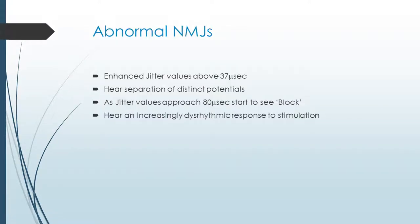Let's move on to abnormal neuromuscular junctions now. Here they have larger jitter values above 37 microseconds, and so one's hearing separation of distinct potentials. Furthermore, as jitter values approach 80 microseconds, one starts to hear and see block, and one's hearing a dysrhythmic response to stimulation.